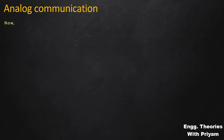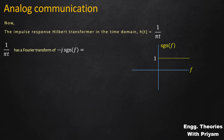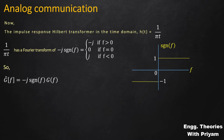The impulse response h(t) = 1/(πt) has a Fourier transform of −j·sgn(f). The signum function sgn(f) equals +1 when f > 0, 0 when f = 0, and −1 when f < 0. So −j·sgn(f) equals −j when f > 0, 0 when f = 0, and +j when f < 0. Substituting into equation 2, the Fourier transform of the Hilbert transform of g(t) equals −j·sgn(f)·G(f). This shows the relationship between the Fourier transform and the Hilbert transform.